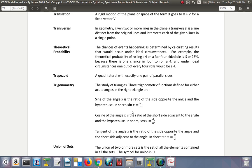In geometry, given two or more lines in a plane, a transversal is a line distinct from the original lines and intersects each of the given lines in a single point. So when you have two lines, then you have a third line that cuts across those two lines—that's a transversal.